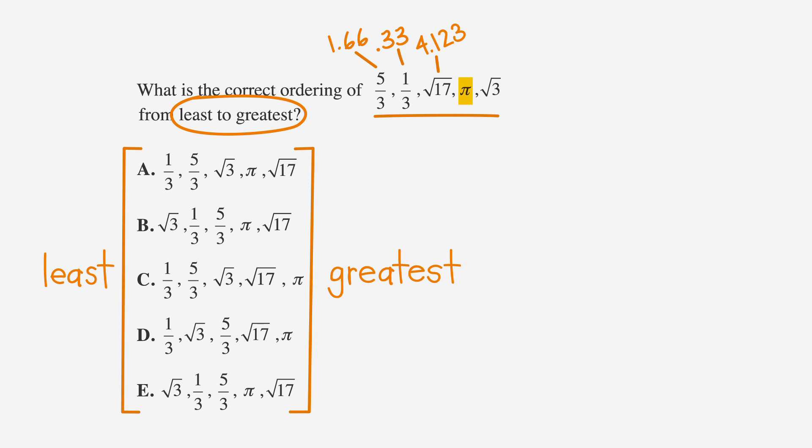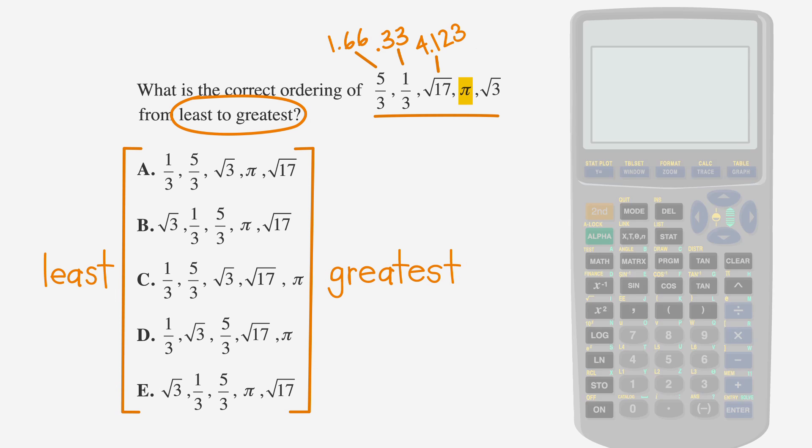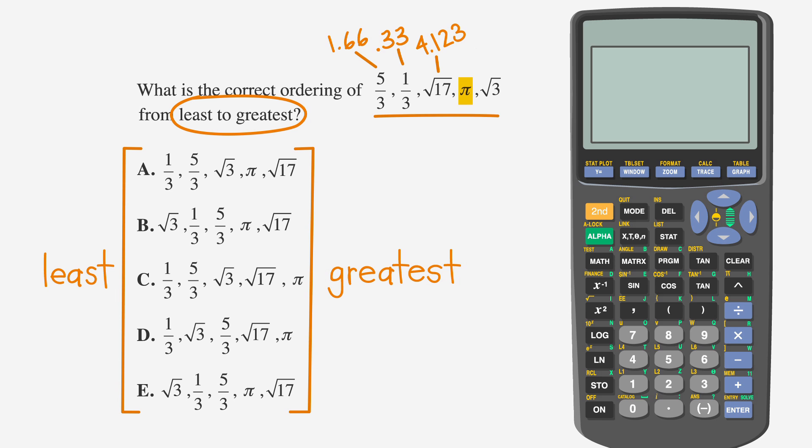You might already know the value of pi, but many calculators also have a pi key. On the TI-84, you type pi by first typing the second key, then typing the pi key under the caret key on the right hand side of the calculator, then enter. Let's make a note that pi is 3.14. Lastly, we can punch the second key, then square root under the x squared key, then 3, and then enter to find the square root of 3, which is about 1.73.